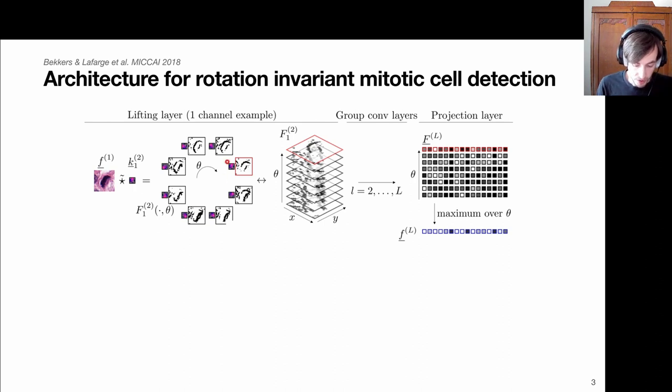Under one orientation, we pick up a certain pattern and that ends up somewhere along this orientation or rotation axis in these feature maps.